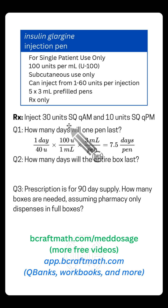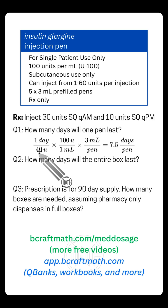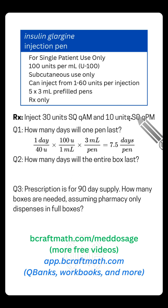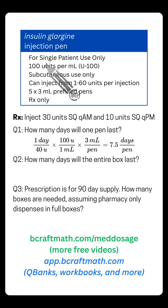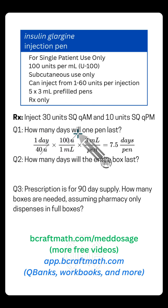Now the dimensional analysis. Our goal is: how many days will one pen last? Starting with days — in one day the person uses 40 units, that's 30 units in the morning and 10 units in the evening. So in one day, 40 units. We need to get rid of units, so we use the concentration: 100 units at the top, one milliliter at the bottom. This allows us to cancel out units.